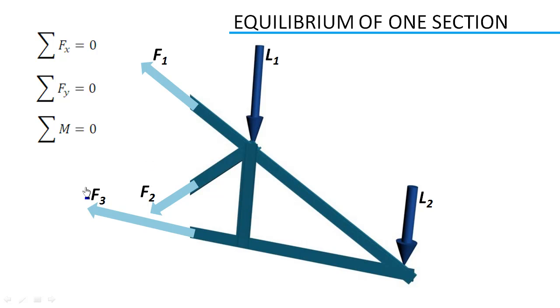It's interesting to see that in method of section, we can completely omit effective forces in uncut members. While solving, if you get sign of any force as negative, that means member is under compression.